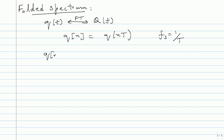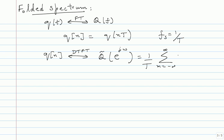One can show that the DTFT of q of n — call it Q tilde of e power j omega — works out to (1/T) times the summation over m from minus infinity to infinity of Q(F minus m over T). This is called folding or aliasing. You take Q of F, shift it by 1 over T, add everything together, and divide by 1 over T. The shape of the spectrum is decided by the summation. Aliasing is very important.